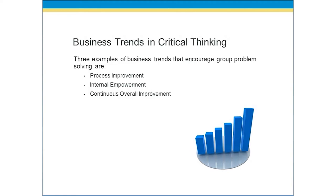And then there's continuous overall improvement. Much like process improvement, continuous overall improvement is not a one-time process examination, but a continuous improvement where individuals are continuously seeking out opportunities to improve the overall organization and its processes. Everyone in the organization has the mindset that they are to work together to discover problems and continuously, completely fix them.